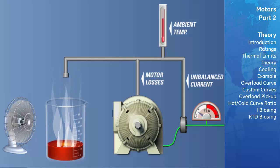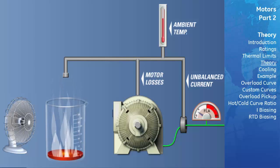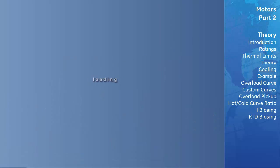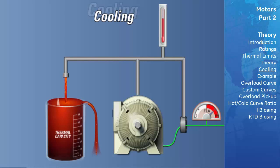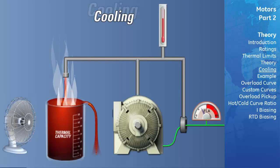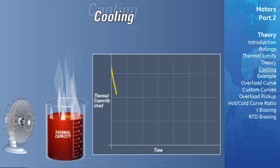The rate at which thermal energy evaporates and the final level it will drop to is a function of the motor data and load current. The vessel is also emptied when the motor is stopped, at a rate based on the stopped cooling time. The thermal capacity used value is reduced in an exponential manner when the motor current is below the overload pickup set point, simulating motor cooling.